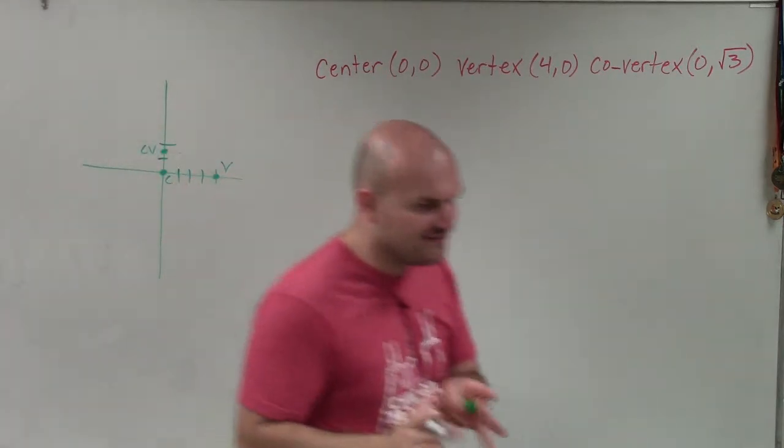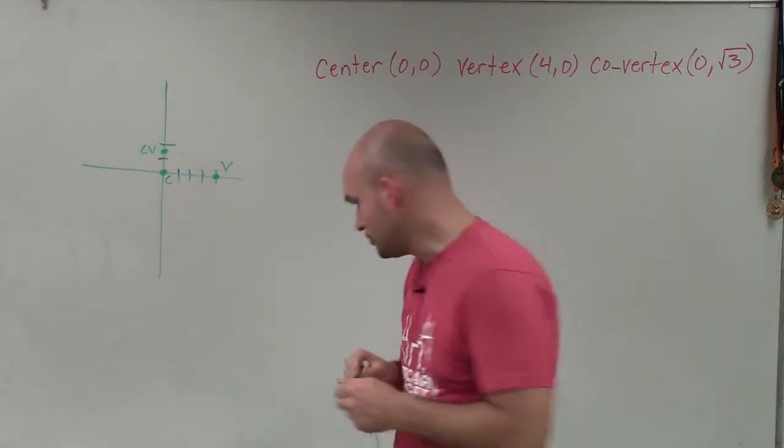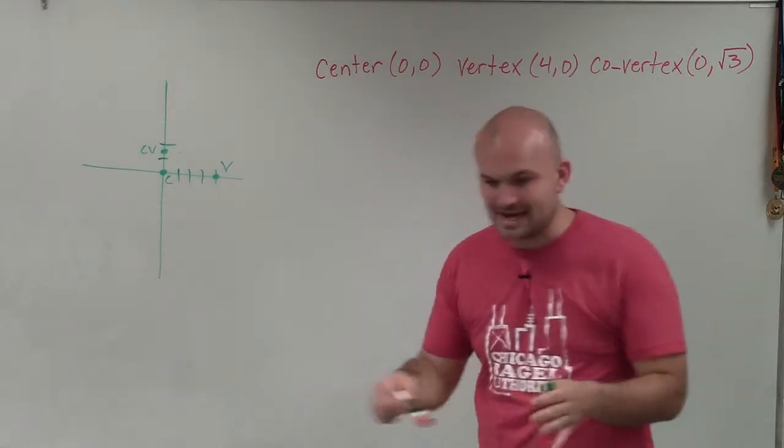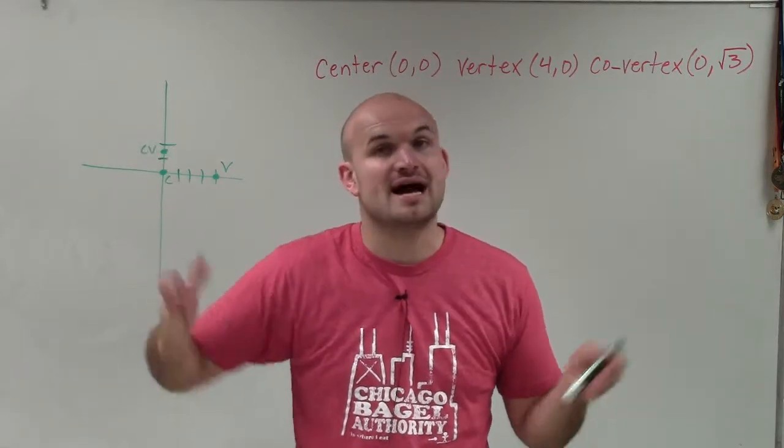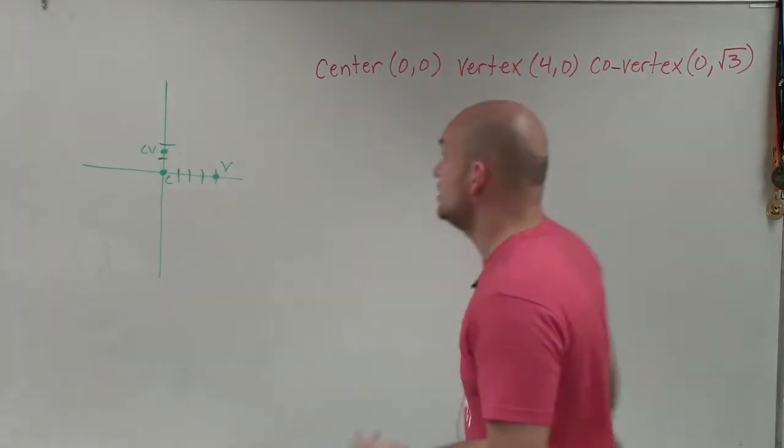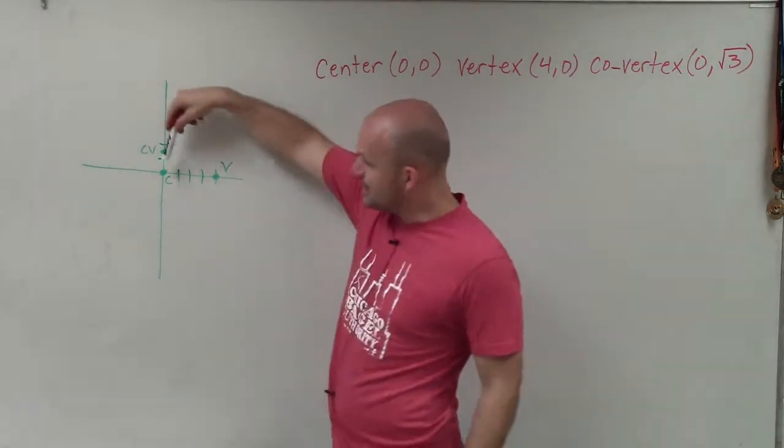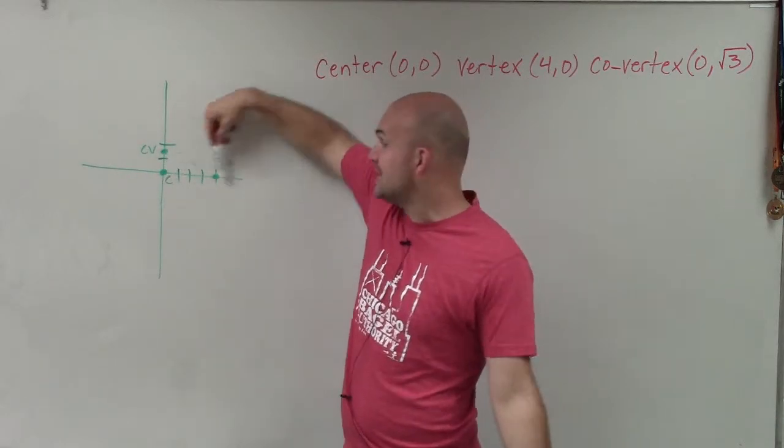Now, to identify whether the major axis is horizontal or vertical, the important thing to understand is that the center, the vertices, and the foci all lie on the major axis. Right now, you can see that my vertex and my center are on the x-axis.